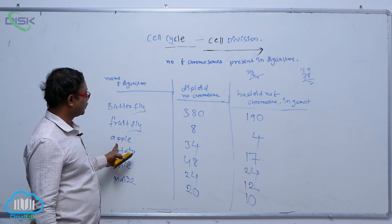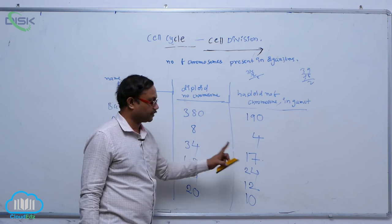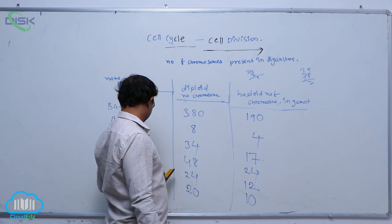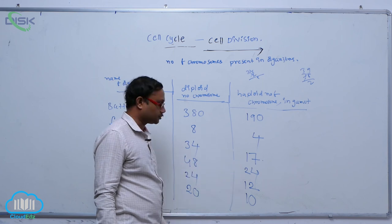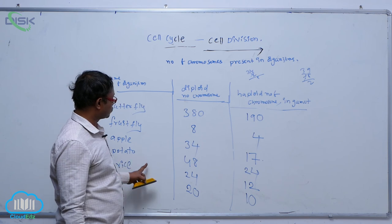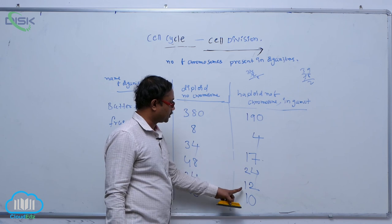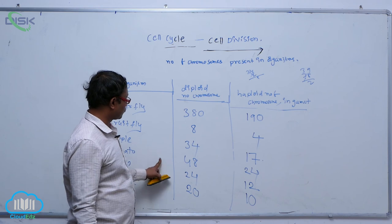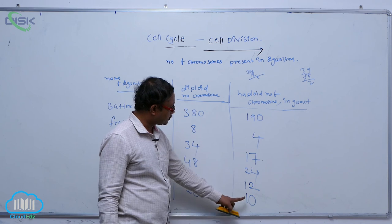In apple, the diploid number of chromosomes is 24, and the haploid number is 12. In rice, the diploid number of chromosomes is 24, and the haploid number in each gamete is 12. In maize, the diploid number of chromosomes is 20, and the haploid number in each gamete is 10.